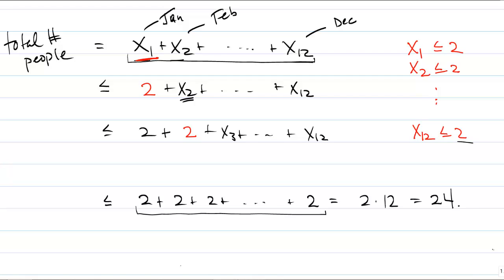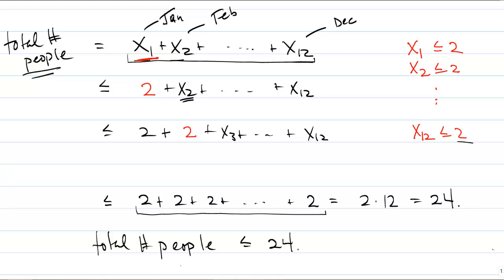The number of people equals the value of the sum of the variables x1 through x12, and we've just shown that this sum is less than or equal to 24. Therefore, the total number of people is less than or equal to 24. This contradicts the theorem's assumption that the group has 25 people. Since we've obtained a contradiction, it cannot be the case that at most two people are born in each month — therefore, there must be some month in which at least three people were born.